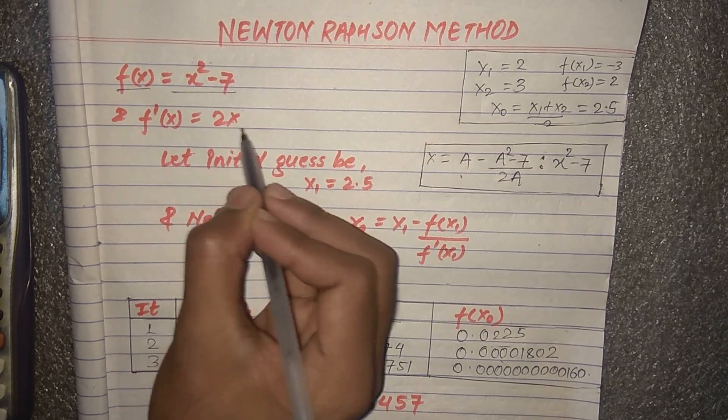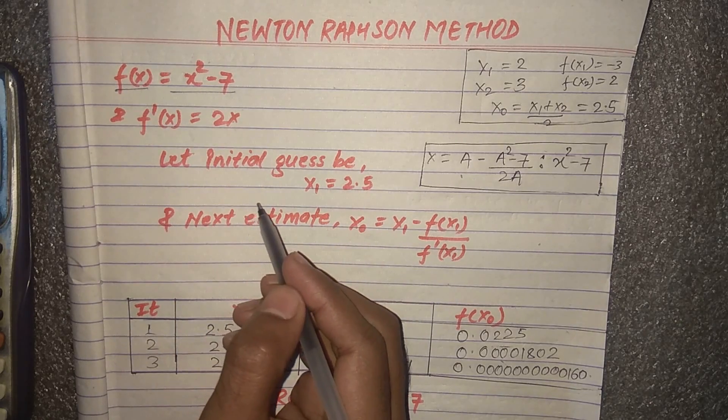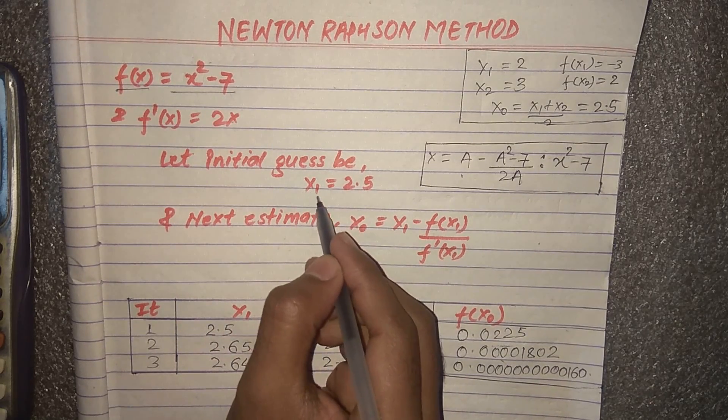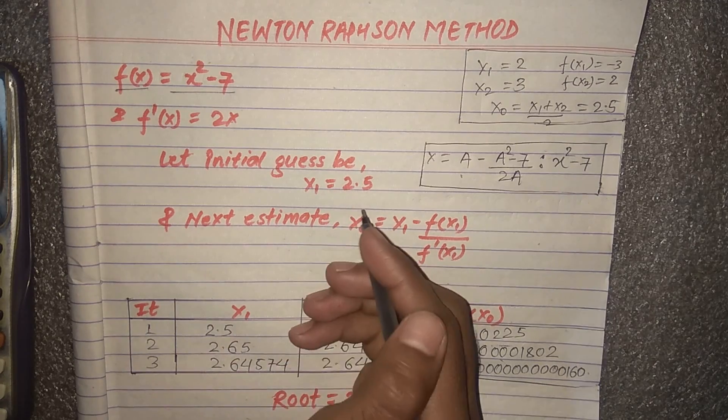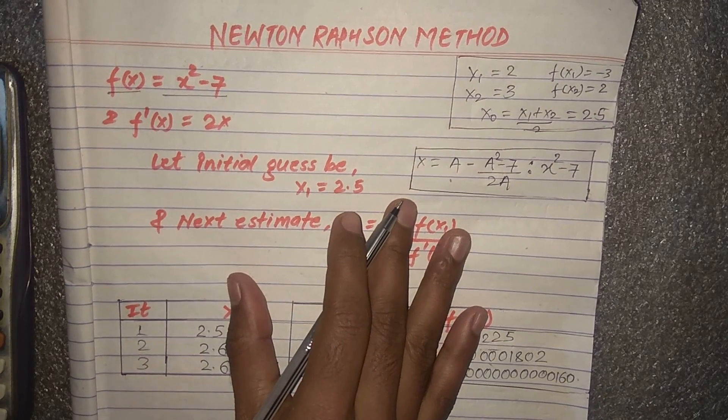So we'll choose the initial guess x₁ = 2.5. In my previous lectures I have told you how to choose the initial guesses.